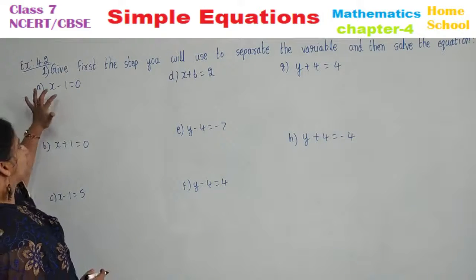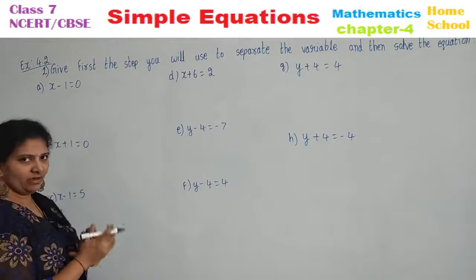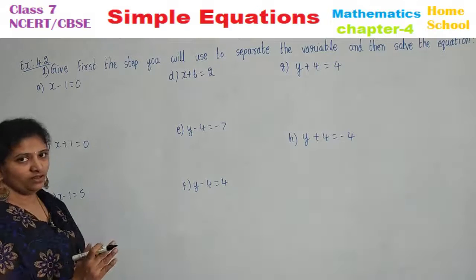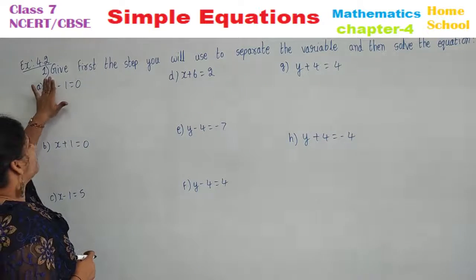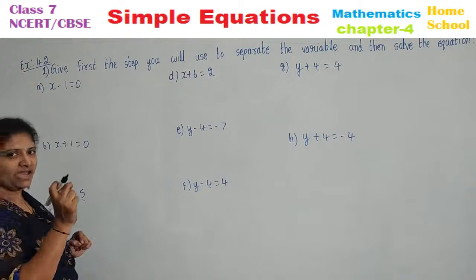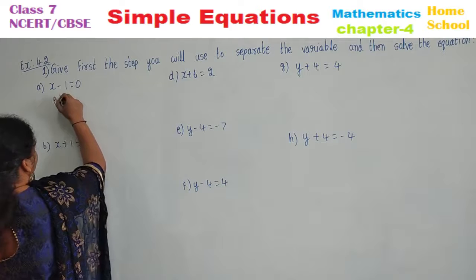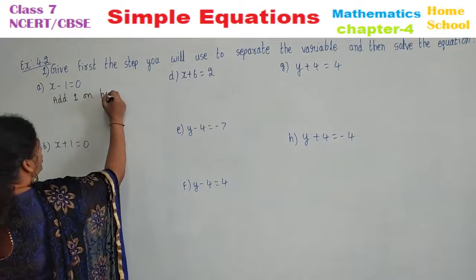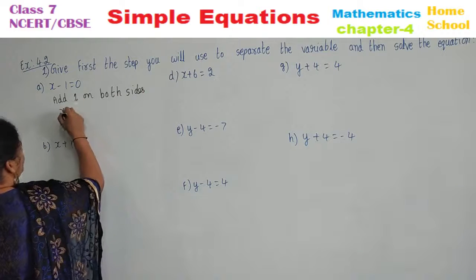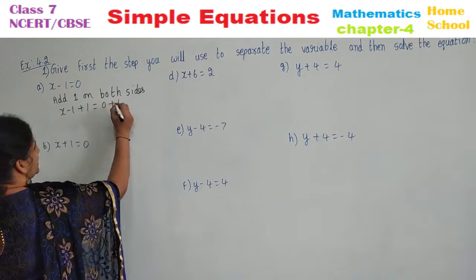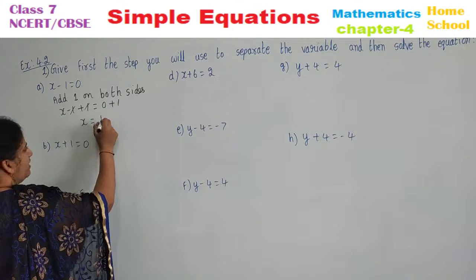First sub-question: x minus 1 equals 0. What is the condition? First, choose the step to separate the variable. Other than the variable, identify the value — you have minus 1. The opposite of minus 1 is plus 1. So add 1 on both sides: x minus 1 plus 1 equals 0 plus 1. Minus 1 plus 1cancels, so x equals 1.